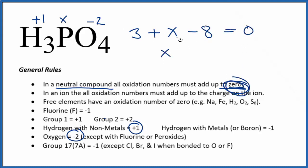So we have X minus five equals zero, add five to both sides, X will equal positive five. So the oxidation number on the phosphorus in H3PO4 is going to be positive five.